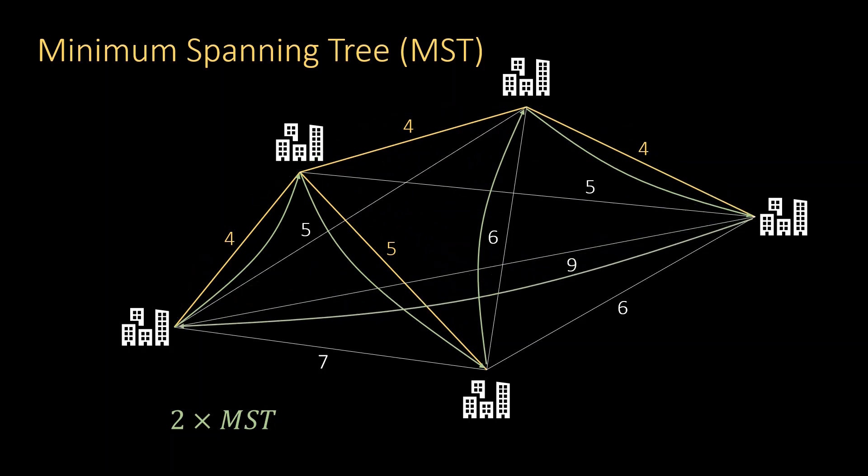Why does this give us a two approximation? By following the minimum spanning tree, we use each of its edges twice. Skipping nodes only makes the trip shorter because the triangle inequality holds. And finally, as we already mentioned, the minimum spanning tree is shorter than the shortest tour. So we have found a two approximation for the metric TSP problem.